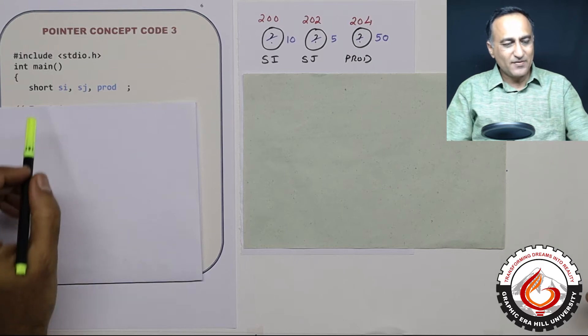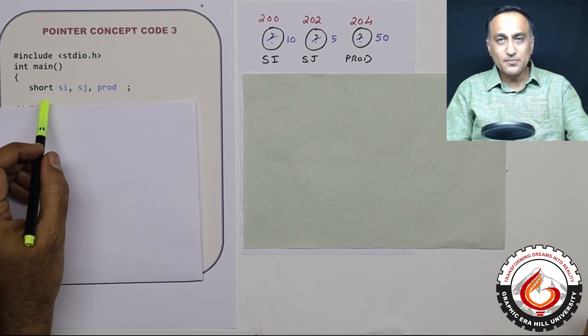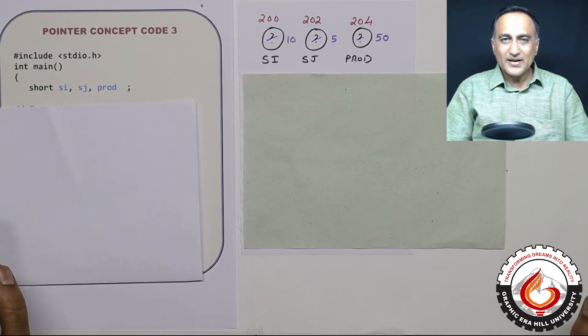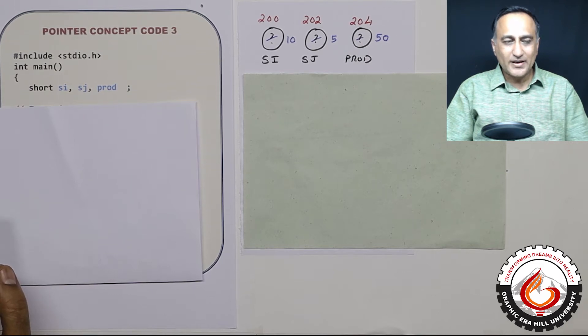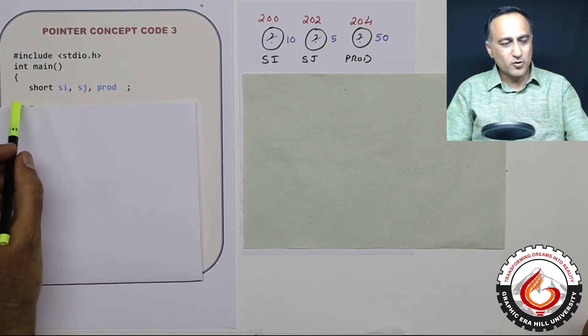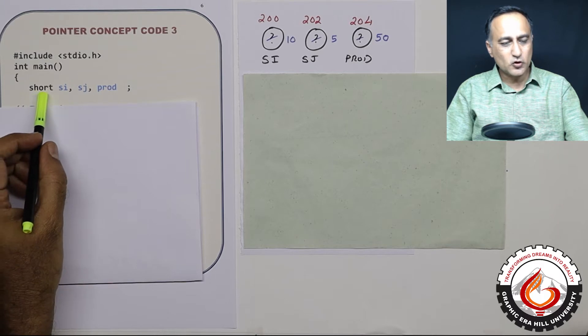So what I have done is I have declared three variables of the type short int. You can declare short int by saying short int and then the variable names, or you can simply just use the keyword short.